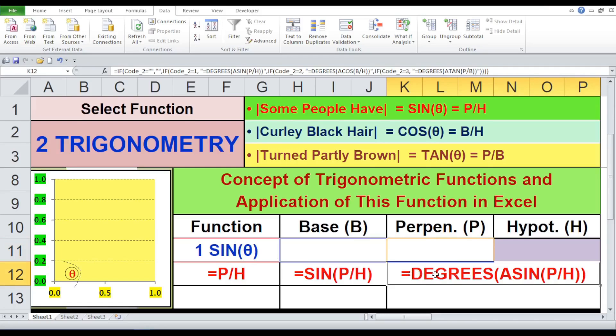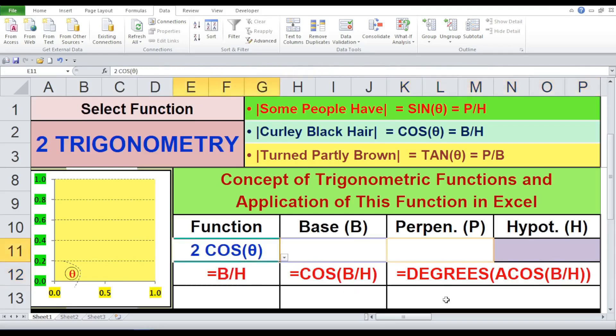However, these functions give us the angle in radians. To convert radians to degrees, we'll use the degrees function. Here's how you can do it. To find theta using Asine: equals degrees, open first bracket, Asine, open first bracket, P by H, close first bracket, close first bracket. To find theta using Acos: equals degrees, open first bracket, Acos, open first bracket, B by H, close first bracket, close first bracket.